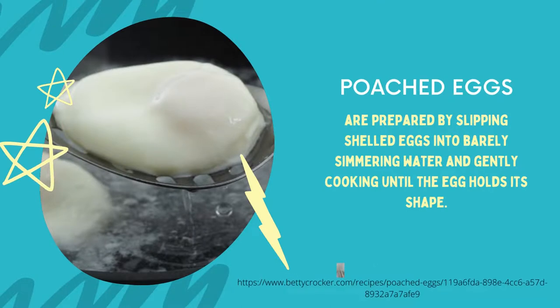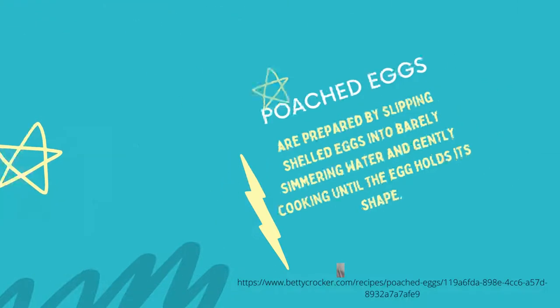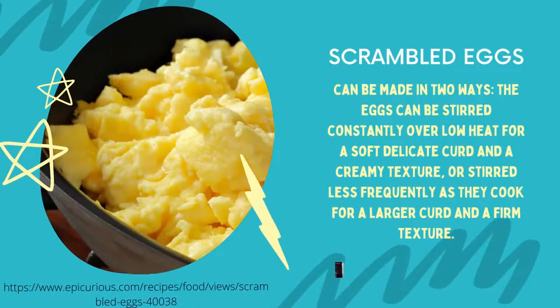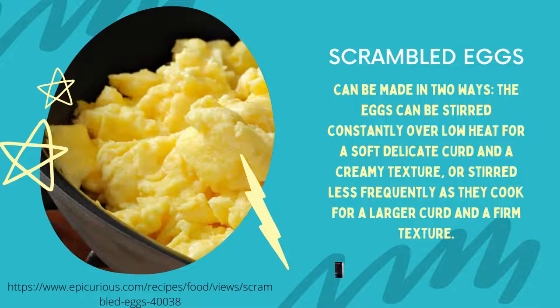Poached eggs are prepared by slipping the shell of the eggs into very gently simmering water and cooking until the egg holds its shape. The next variety is scrambled eggs, which can be done in two ways: the eggs can be stirred constantly over low heat for a soft, delicate curd and a creamy texture, or stirred less frequently for a larger curd and a firmer texture.